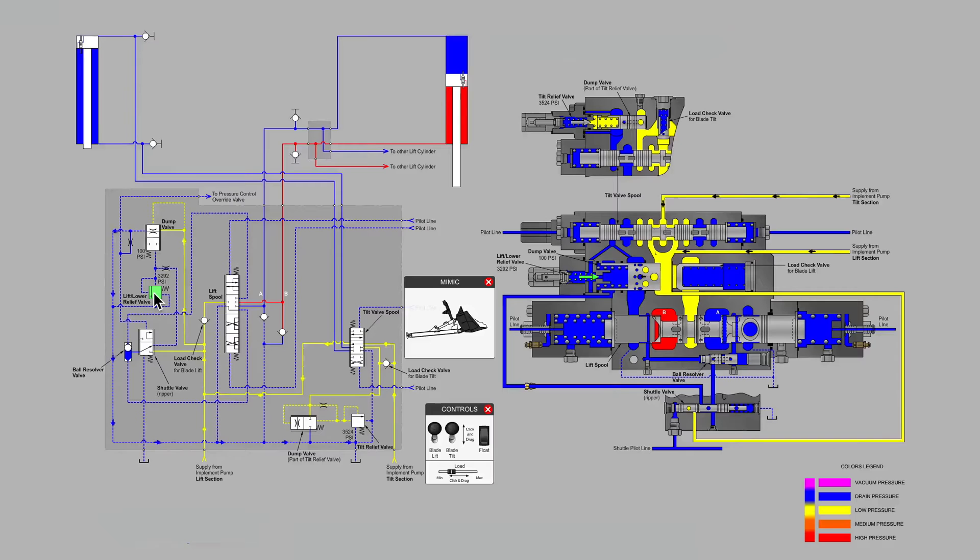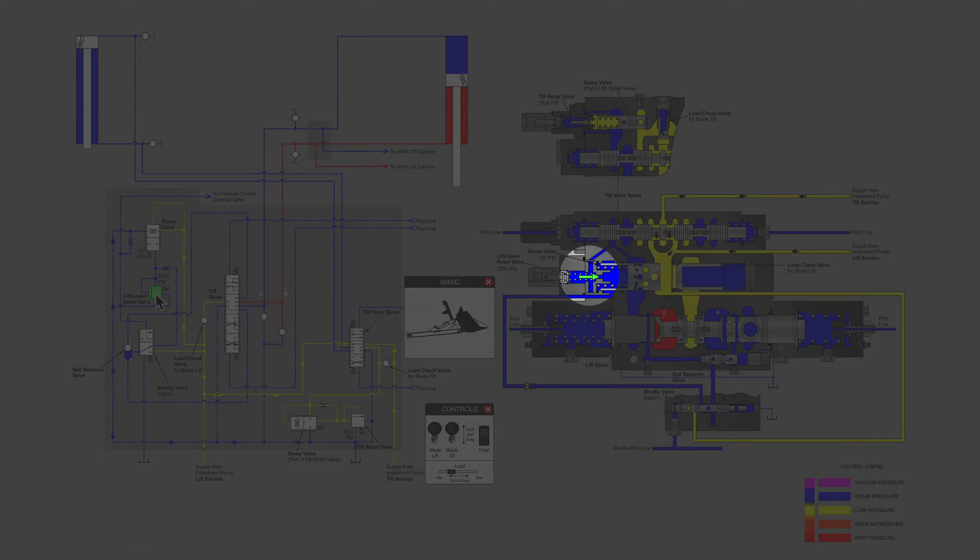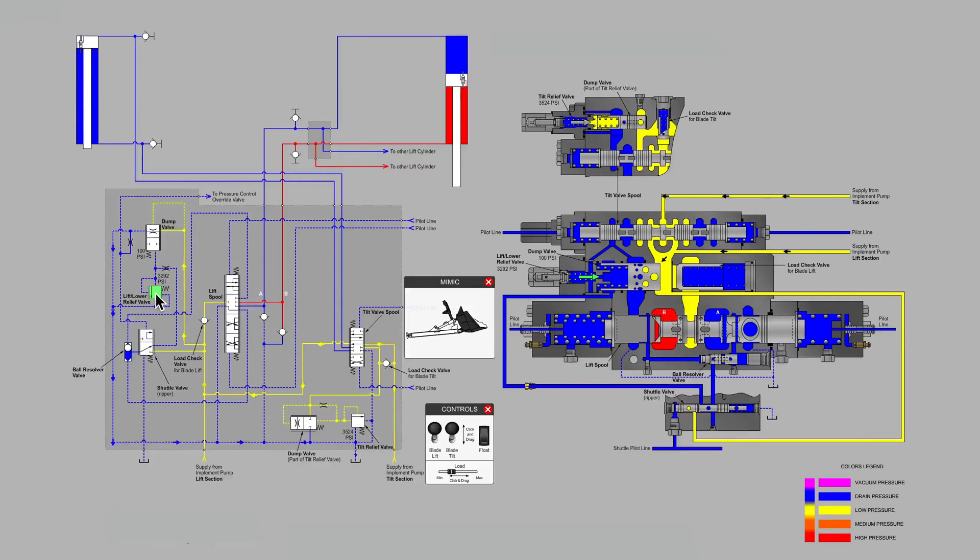So let's mouse over this symbol on the schematic and now look for the matching green highlighting in the cutaway. And you'll notice that this is a very small poppet. Could this small poppet possibly be large enough to handle all of the flow from the large main pumps when a relief function is needed? No, it is not.